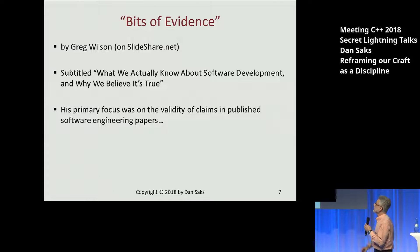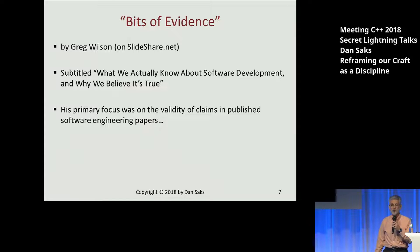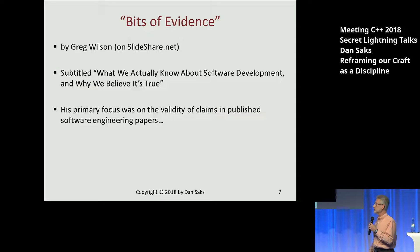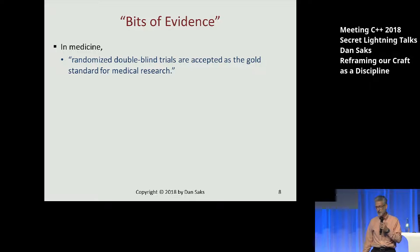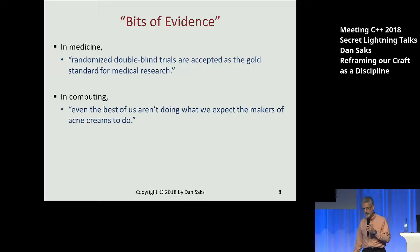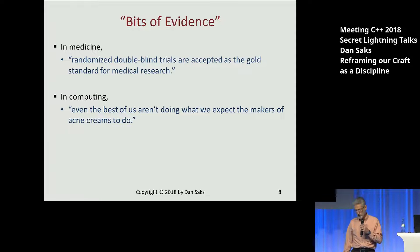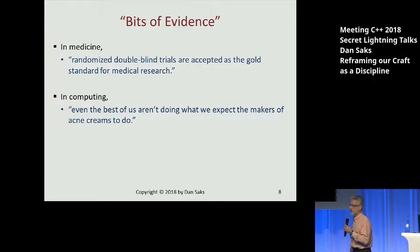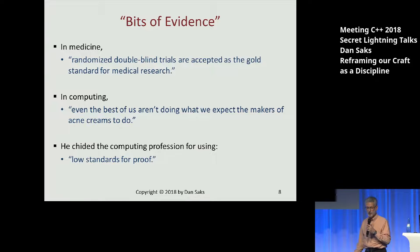One of them that was intriguing was a slide presentation on SlideShare by a gentleman named Greg Wilson, called 'Bits of Evidence,' subtitled 'What We Actually Know About Software Development and Why We Believe It's True.' His primary focus wasn't so much on the craft of software development but on academic peer-reviewed papers in the field. What he observed was that whereas in medicine, randomized double-blind trials are an accepted gold standard for medical research — stuff just doesn't get published if it doesn't pass this standard — even the best people writing papers in computing journals aren't doing what we expect of the makers of acne creams. There are higher standards for that than for the software papers being published. He chided the profession for using low standards of proof.